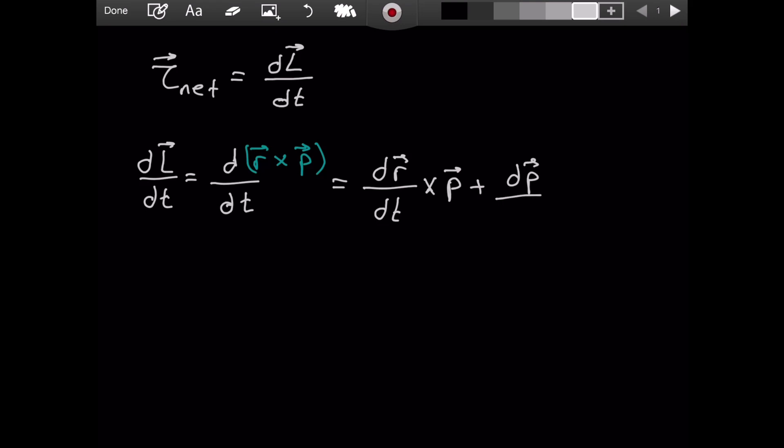So we put the cross product plus the derivative of the second one, dp/dt, cross the first one. We should say cross, not times.